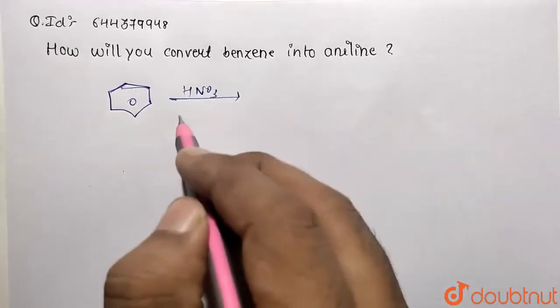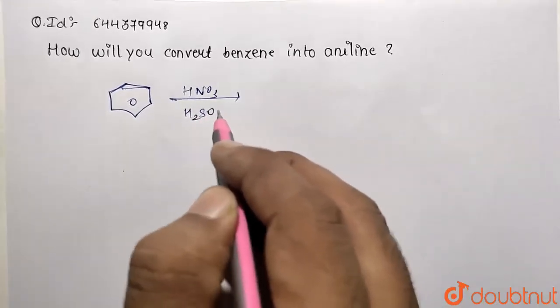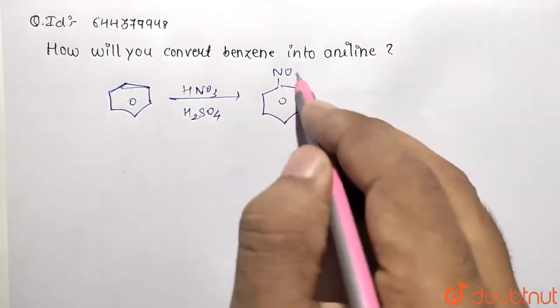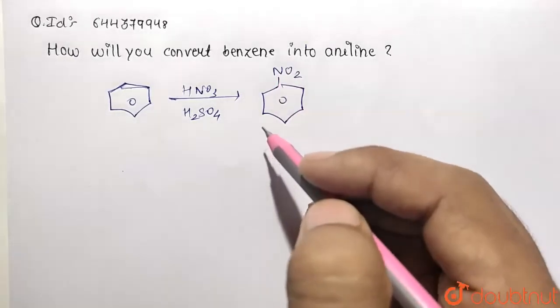HNO3 is nitric acid in the presence of sulfuric acid, so it's going to substitute the NO2 group. So over here we are going to have NO2 group this side.